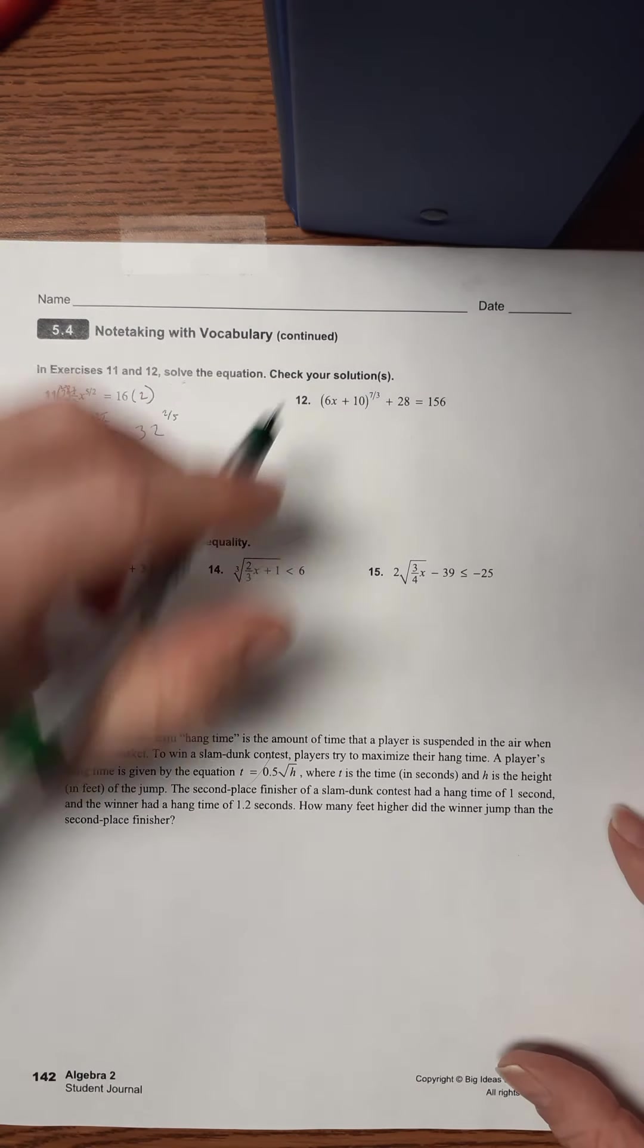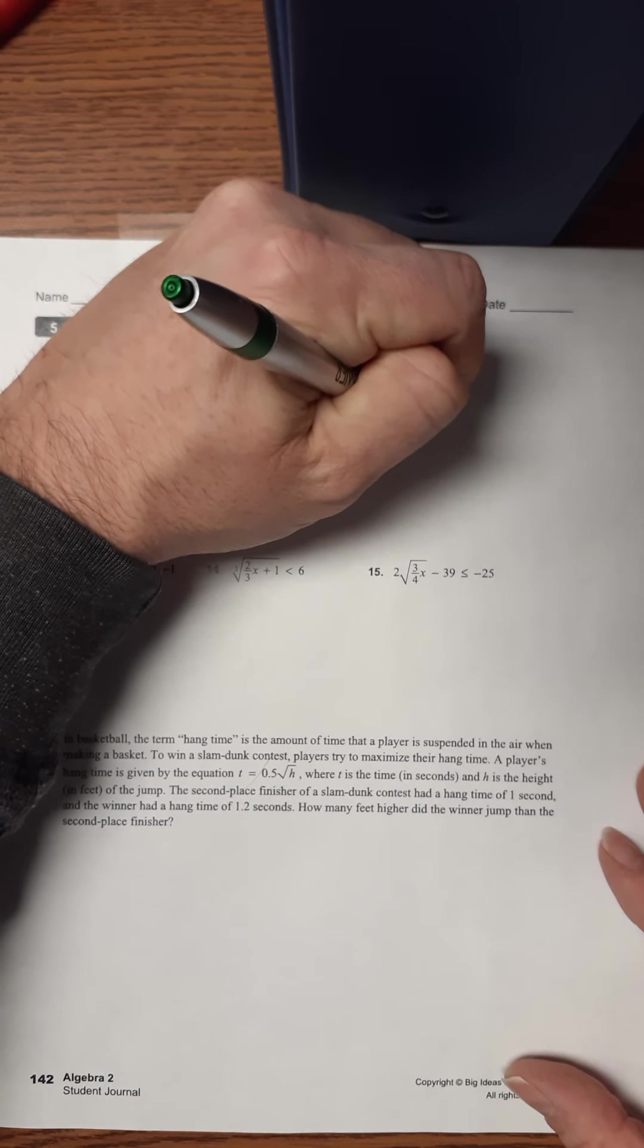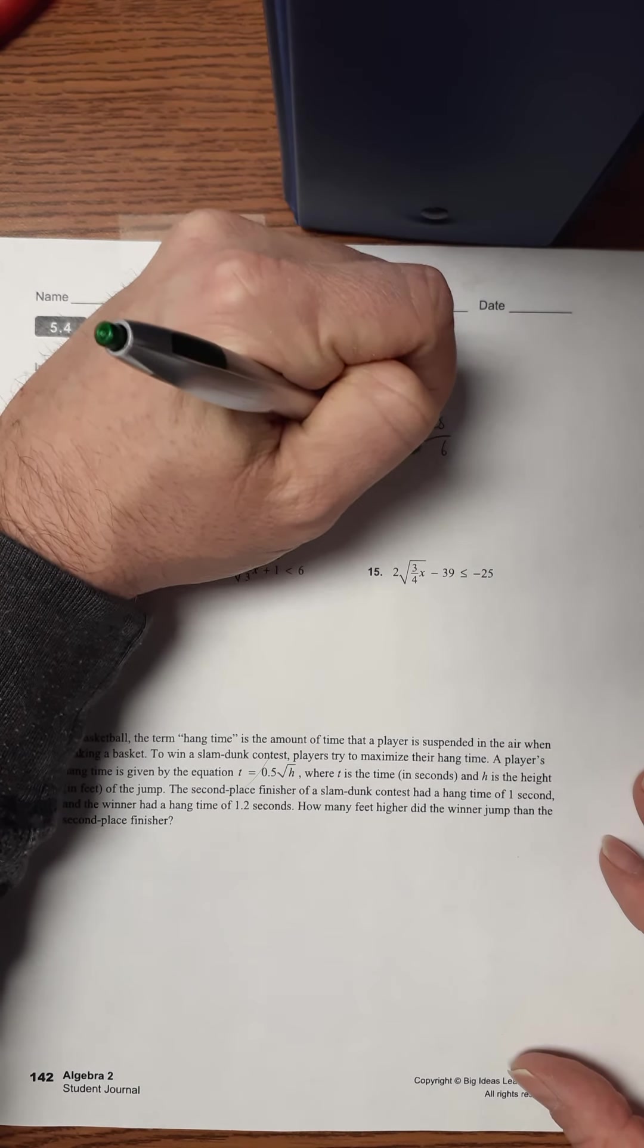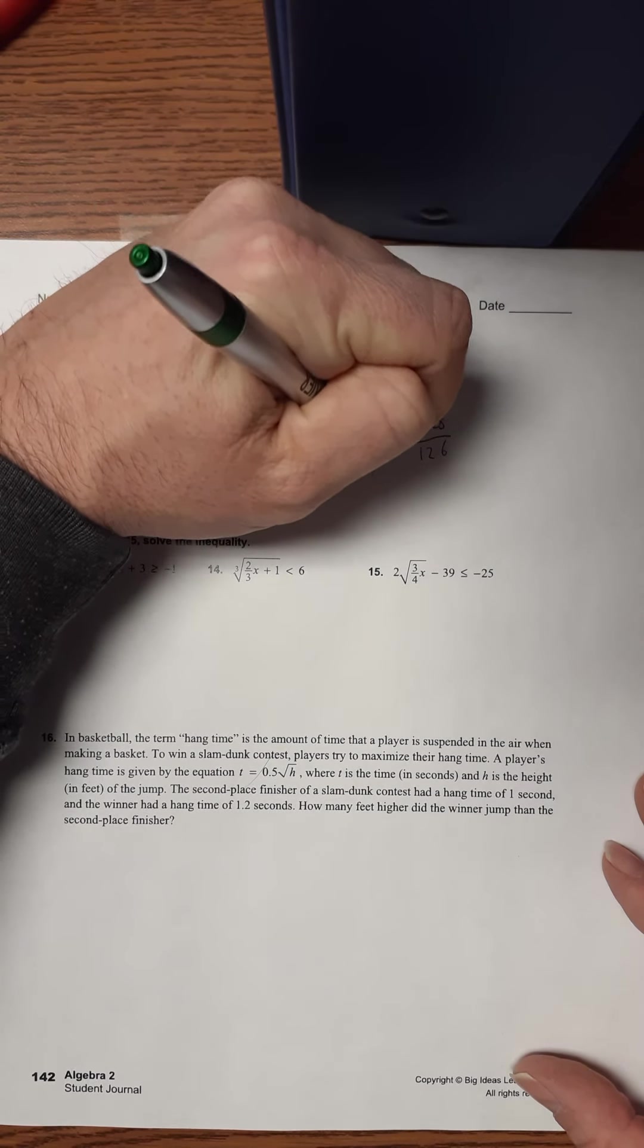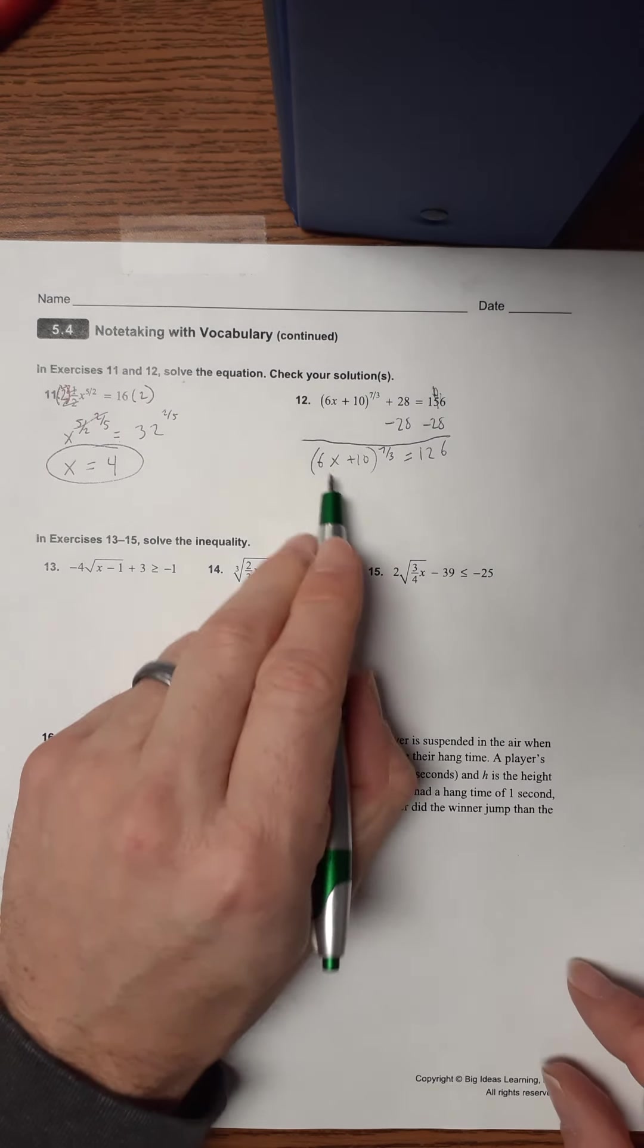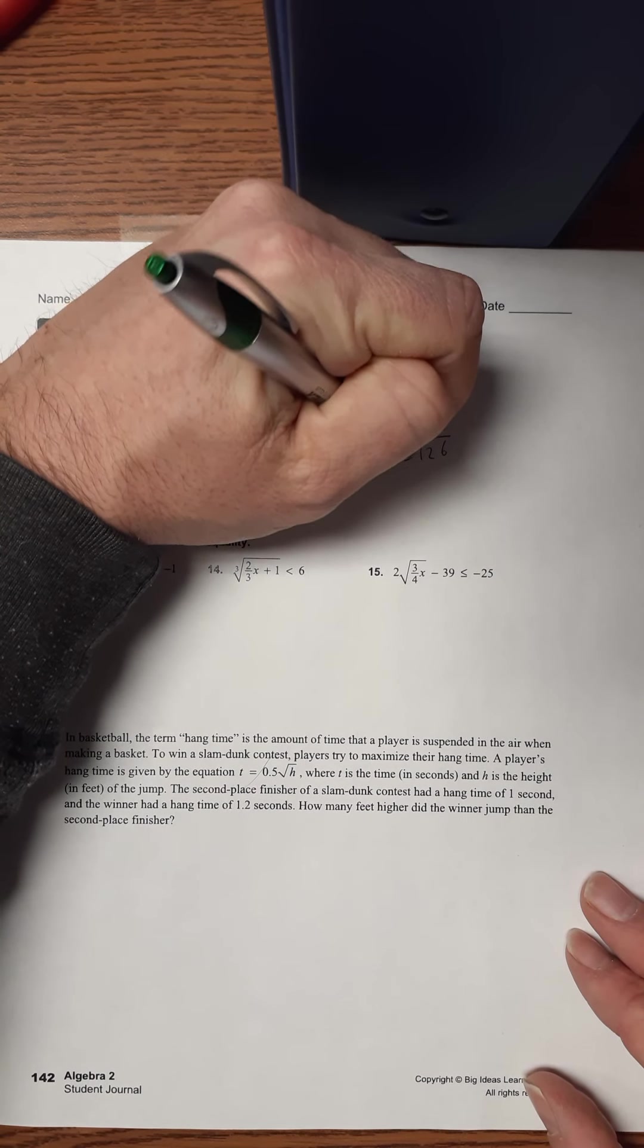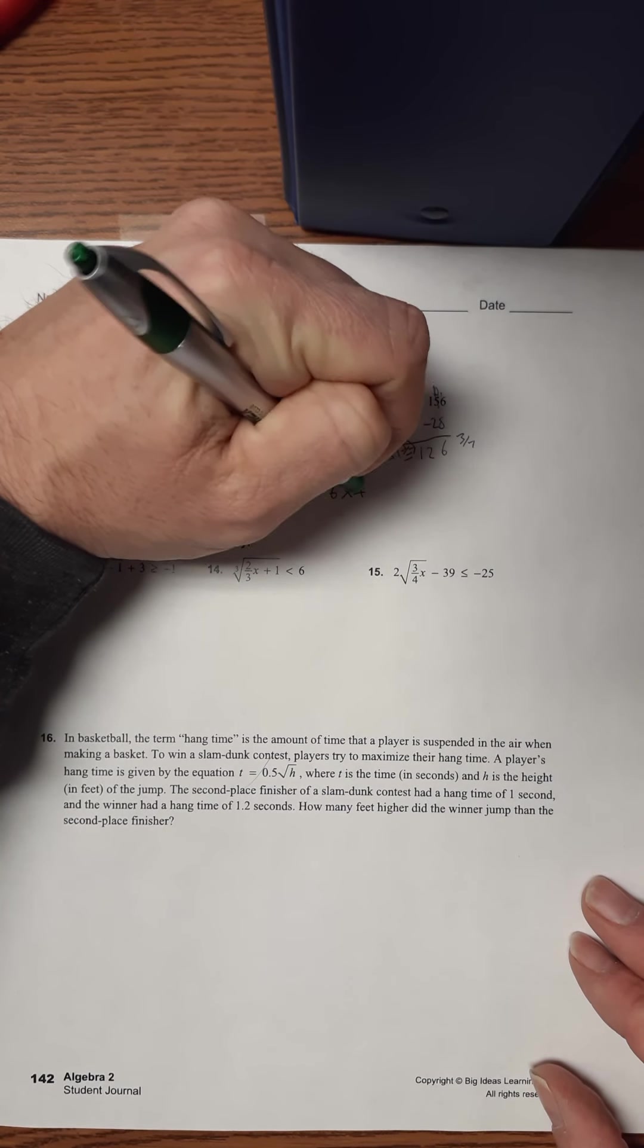Now we're on to number 12. So here we're gonna isolate the radical so we have to move the 28 first. So minus 28. So that's gonna be 126. So 6 X plus 10 to the 7 thirds equals 126. So now I've got the radical isolated. So I'll raise this to the reciprocal. So I'll raise this to the 3 sevenths. And I'll raise this to the 3 sevenths. So on this side, we just have 6 X plus 10.